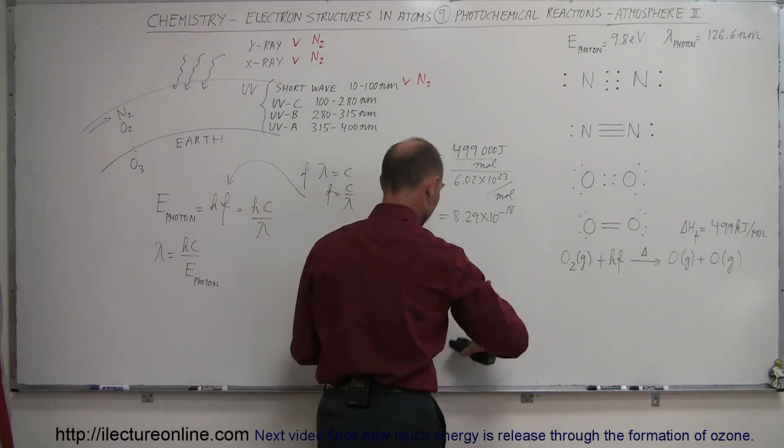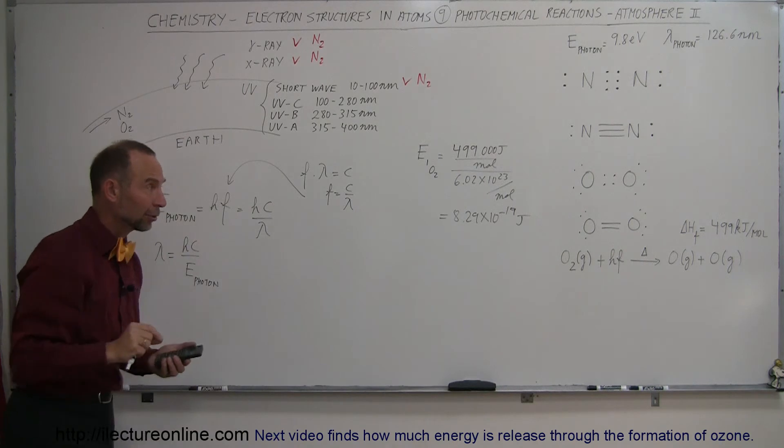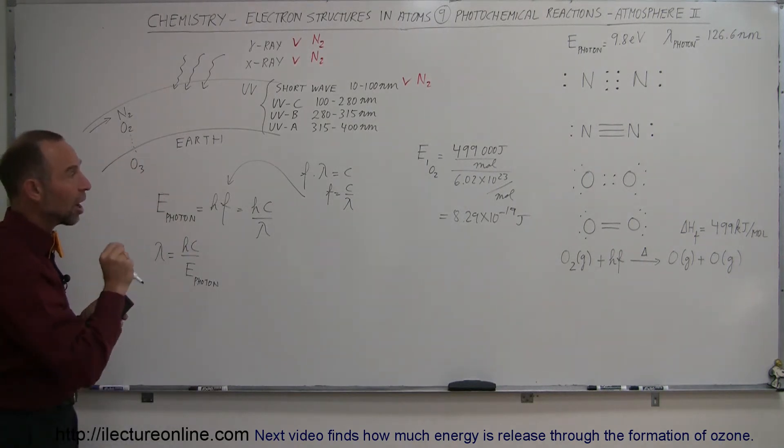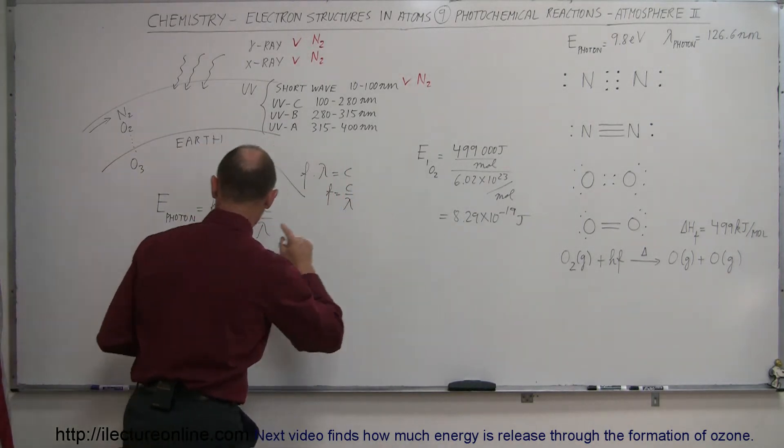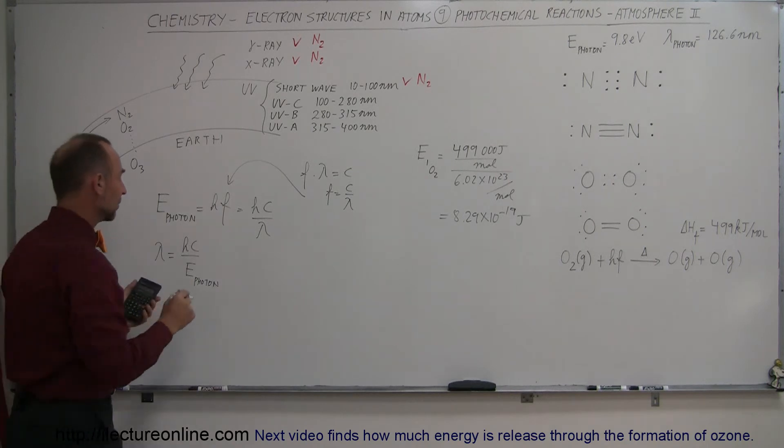19 joules. So that's the energy required to dissociate a single oxygen atom. If we take that number and plug it in here, we can figure out the wavelength of that energy that can be absorbed.